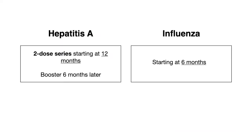The hepatitis A vaccine, not included in that table, is given as a two-dose series starting at one year of age, with the booster given six months after the first dose. The influenza vaccine is something you might be asked about — it can be given starting at six months of age.